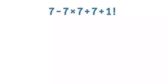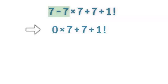We've seen a lot of people do it the following way. Look, 7 minus 7 is 0, right? It's going to be 0 times 7 plus 7 plus 1 factorial. Then in mathematics, 0 times 7 gives 0.